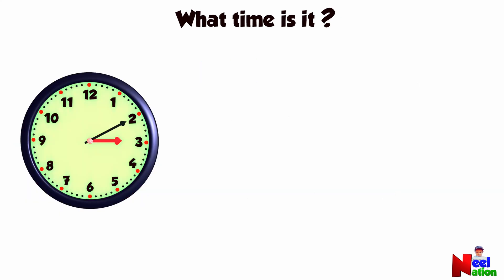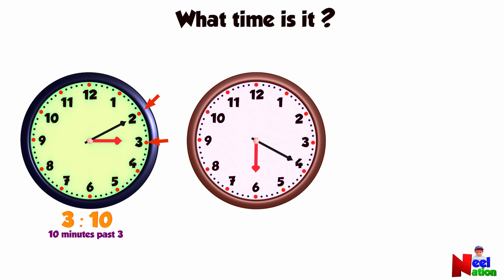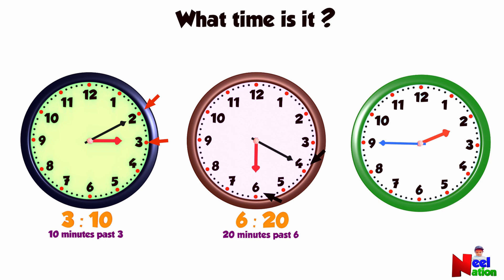Now comes the trickier part. The long hand is at 2 — that is 10 minutes past. The short hand is at 3 — so the time is 3:10, or 10 minutes past 3. Long hand is at 4 — that is 20 minutes past. Short hand is at 6 — so the time is 6:20, or 20 minutes past 6. Long hand is at 45 minutes, short hand is at 2 — so the time is 2:45, or 45 minutes past 2.